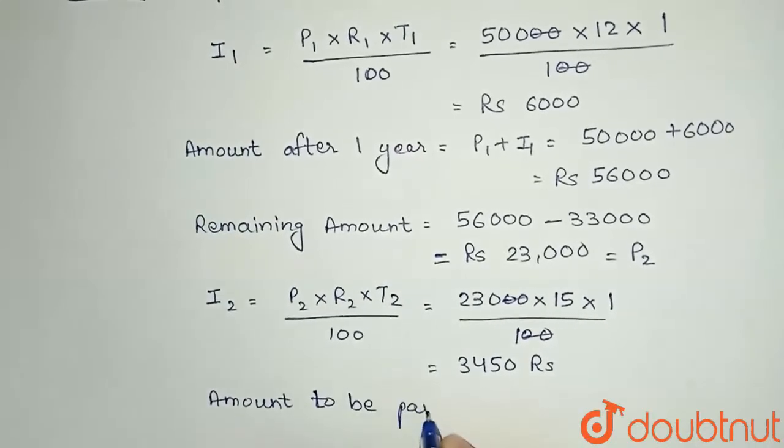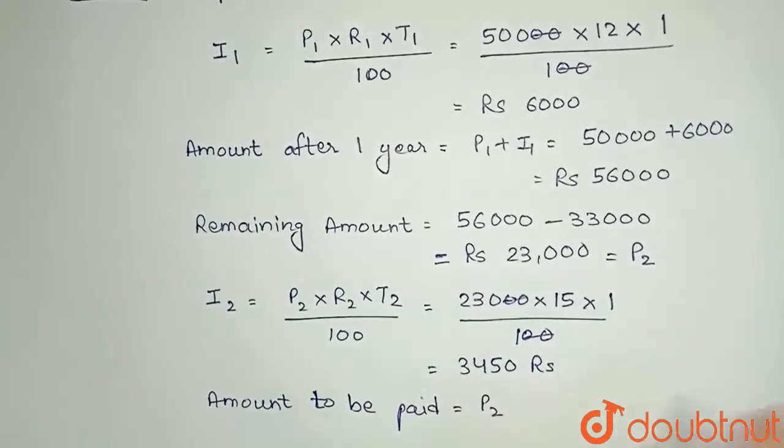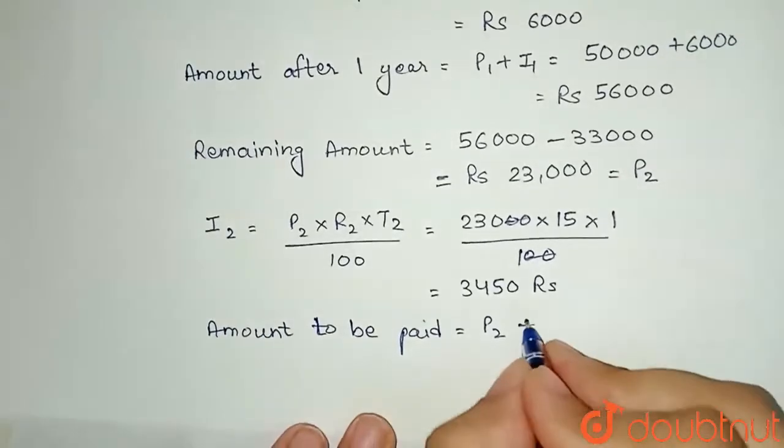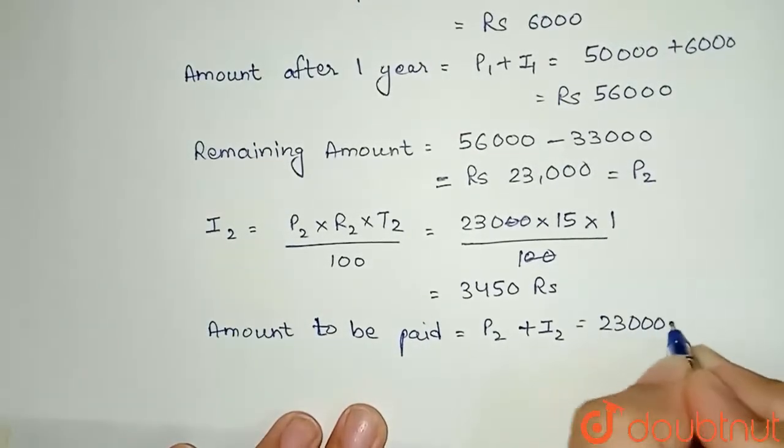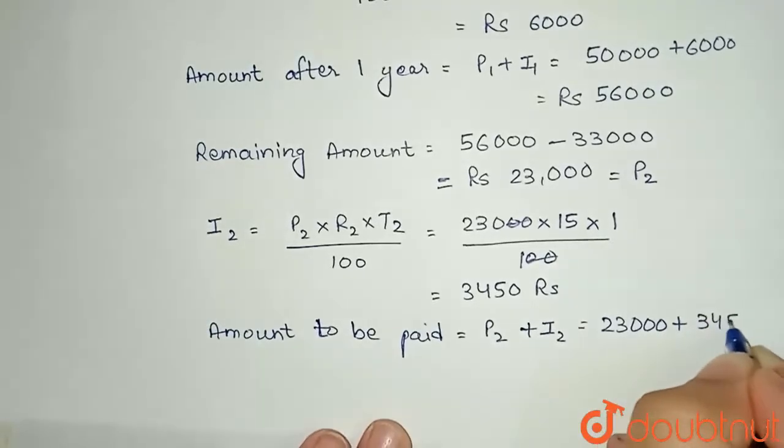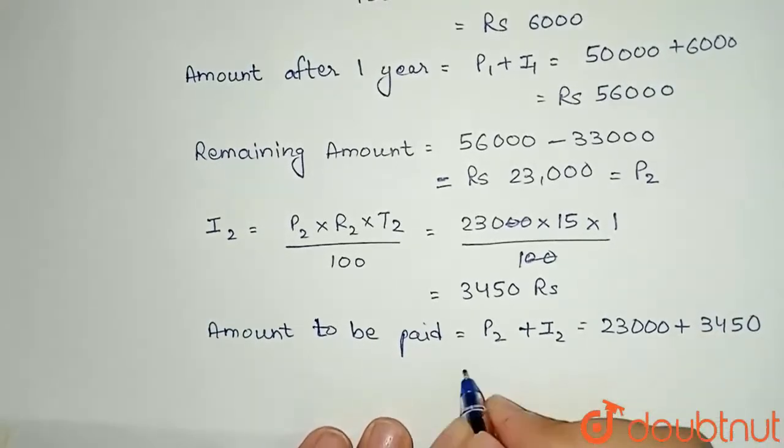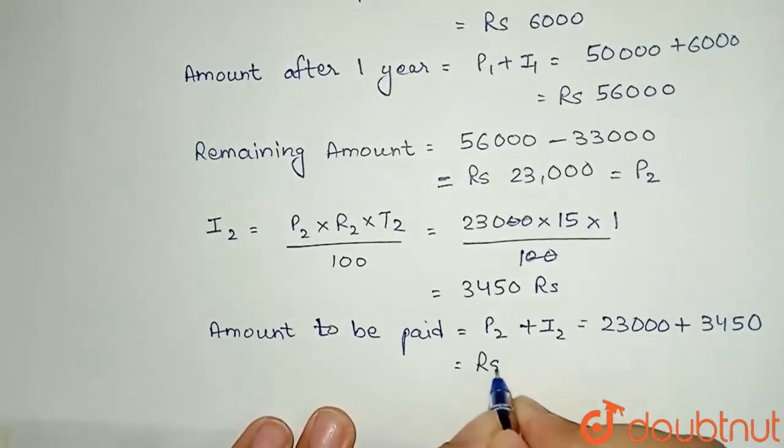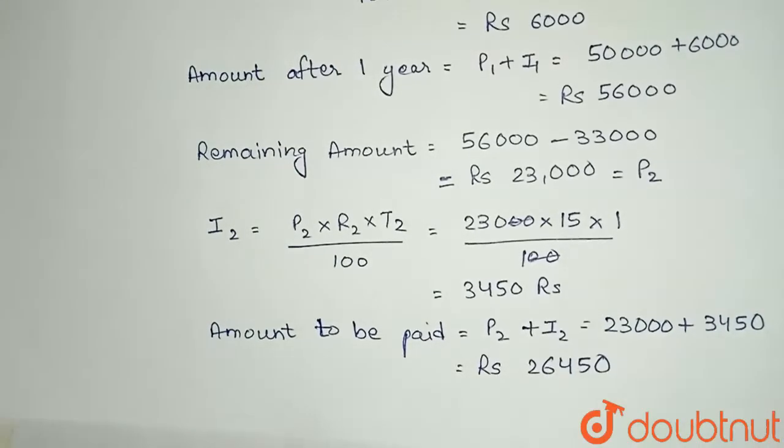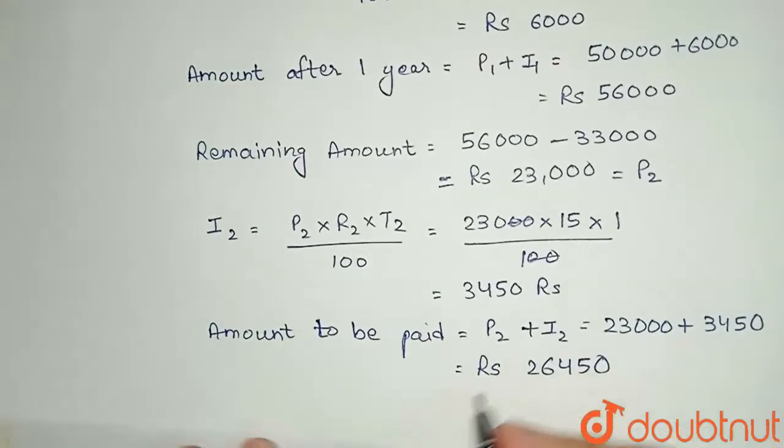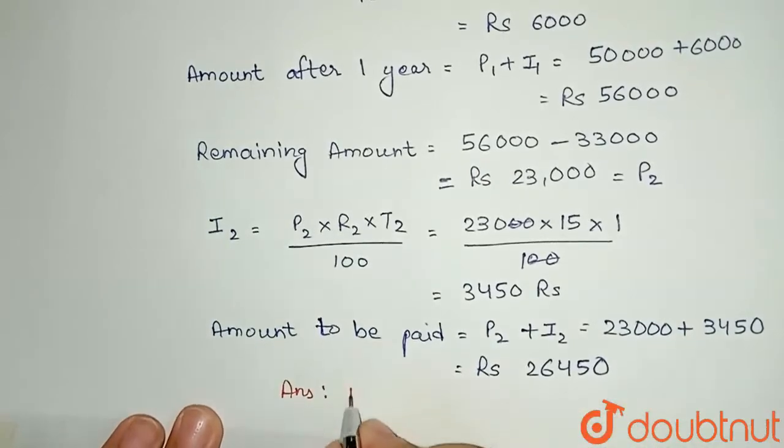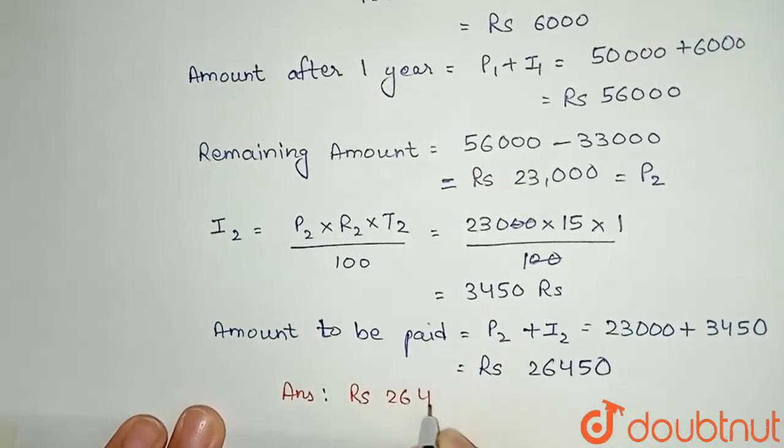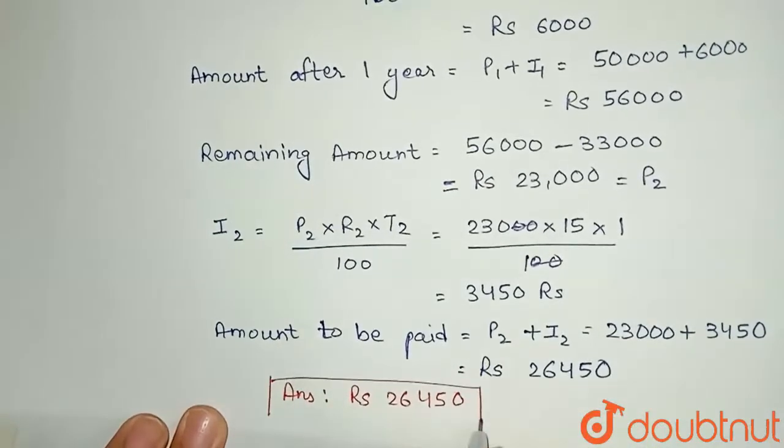The amount to be paid = P2 + I2 = 23,000 + 3,450 = Rs 26,450. So in the question, we were asked how much she has to pay to clear her debt. She has to pay Rs 26,450 to clear her debt. This is our final answer.